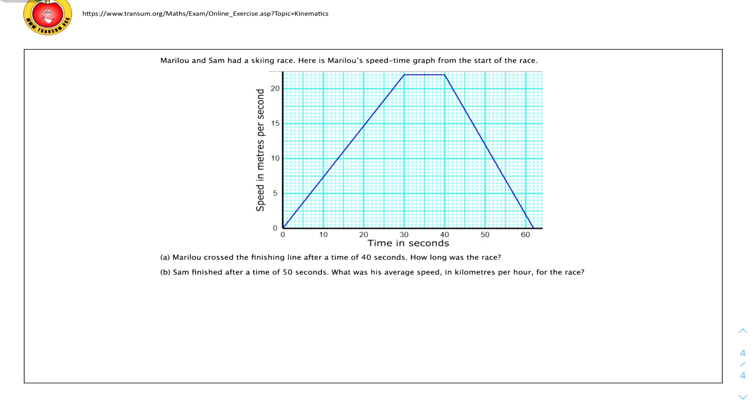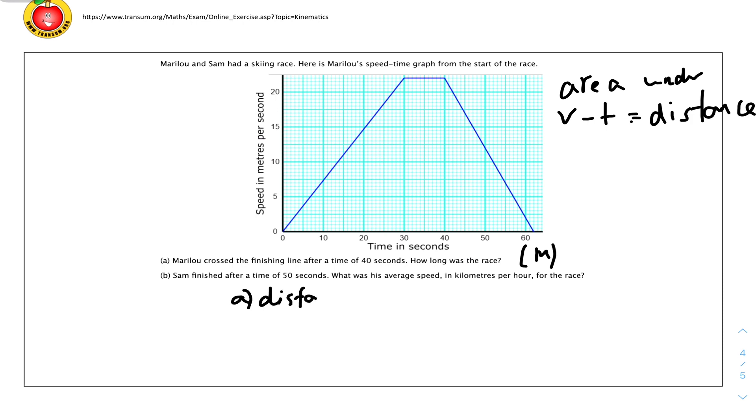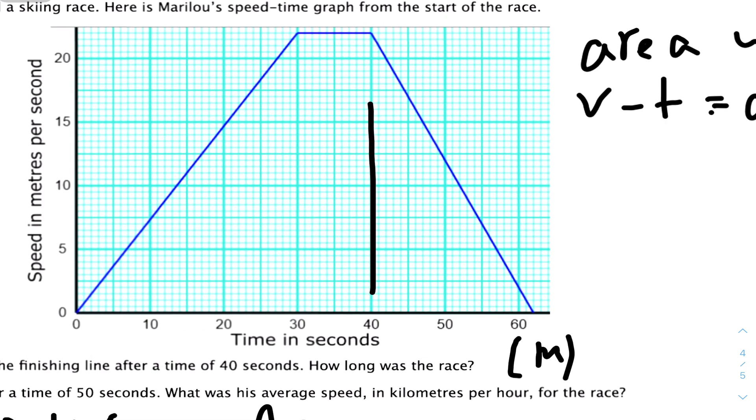We move on to our last question. They had a skiing race, and here is Marilou's speed-time graph from the start of the race. Marilou crossed the finishing line after a time of 40 seconds. How long was the race, in terms of distance, which will be meters? We know that area under velocity-time graph equals distance or displacement.